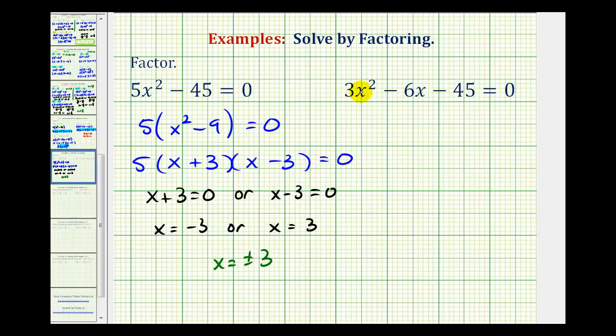Looking at our second example, notice that a is not equal to 1, which usually makes the factoring problem more difficult. However, 3 is the greatest common factor and can be factored out.